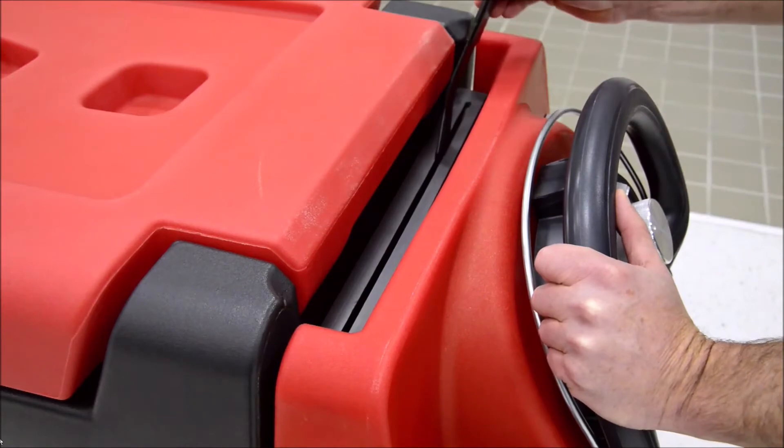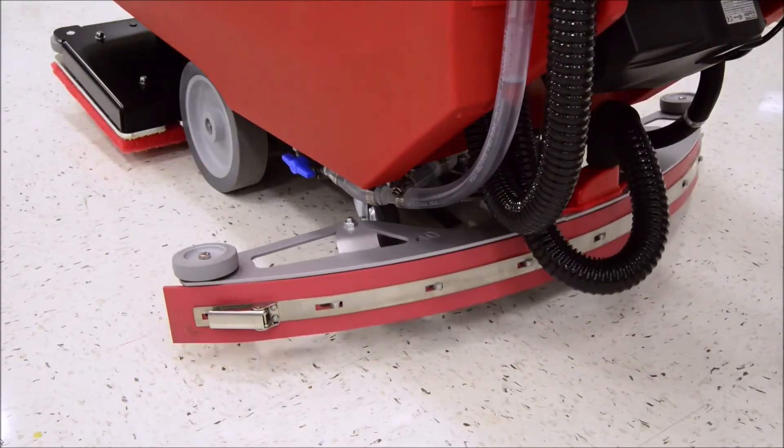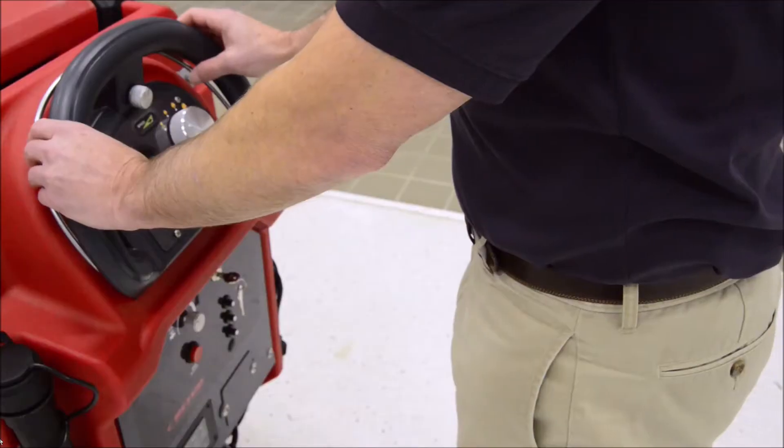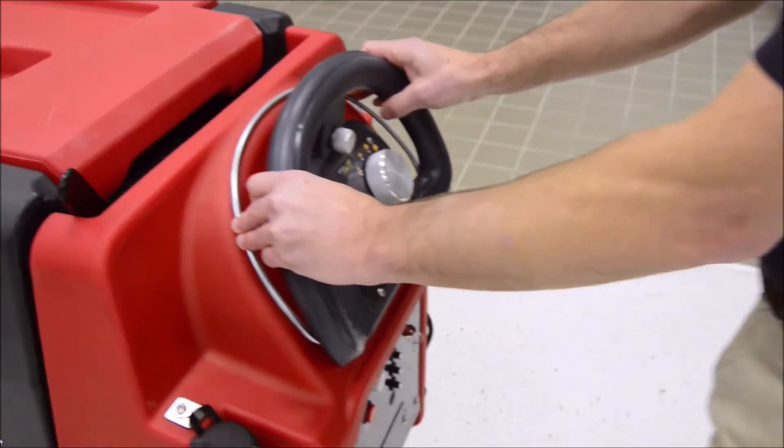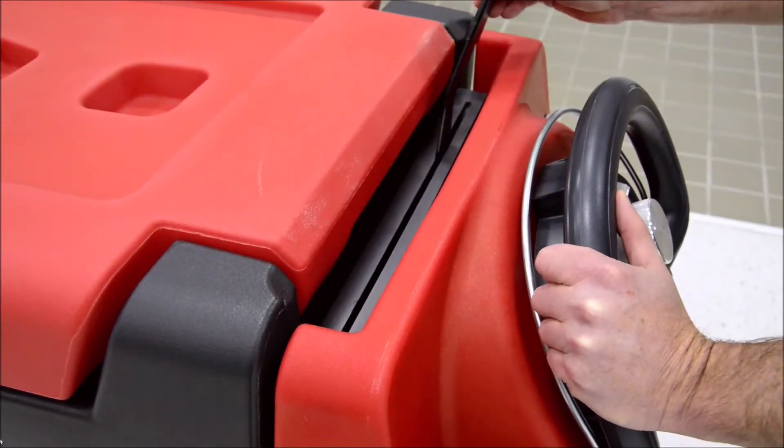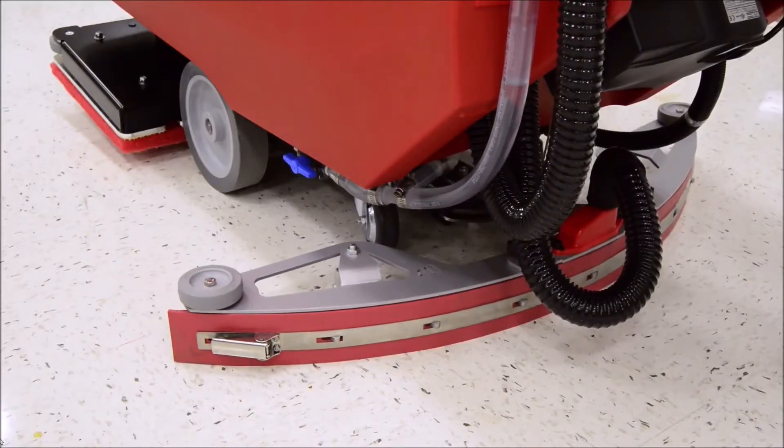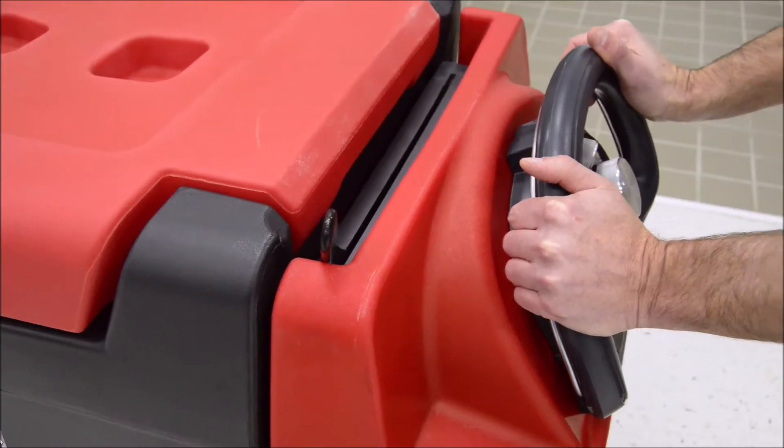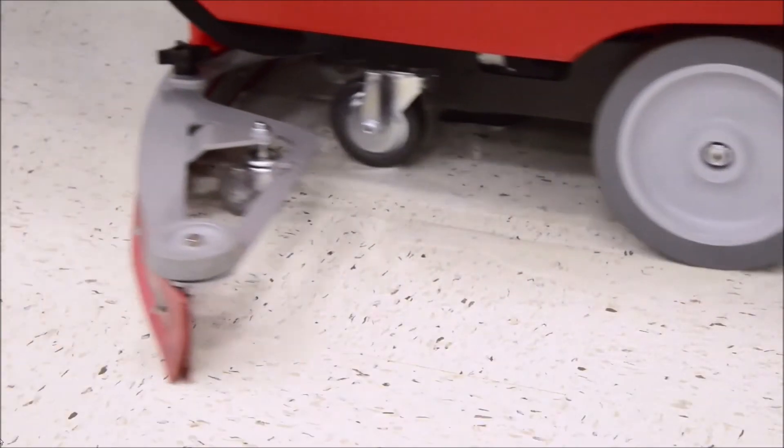Should you need to reverse the machine during scrubbing, first lift the squeegee to the up position, like shown here. Then push the bail trigger forward and the machine will move backward. Be careful when backing the machine when in tight spaces. Once you've reversed to the desired position and are ready to move forward, lower the squeegee into the operating position and squeeze the bail trigger to begin scrubbing again. Be sure to move over the area and recover the water left from when in reverse.